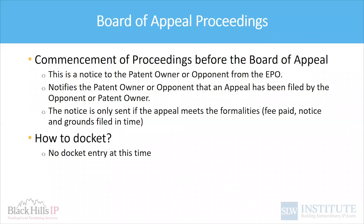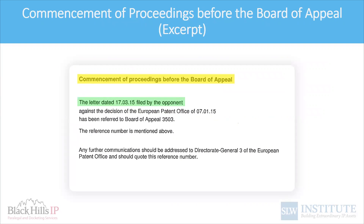After the notice of appeal is filed, the first item from the EPO is called a commencement of proceedings before the board of appeal. This is a notice to the patent owner or opponent that an appeal has been filed, and it is only sent out if the appeal meets the various formality requirements — fees paid, filed timely, and so forth. When this notice is received, there is no docketing entry required. Nothing needs to be done by the docketing department at this time.